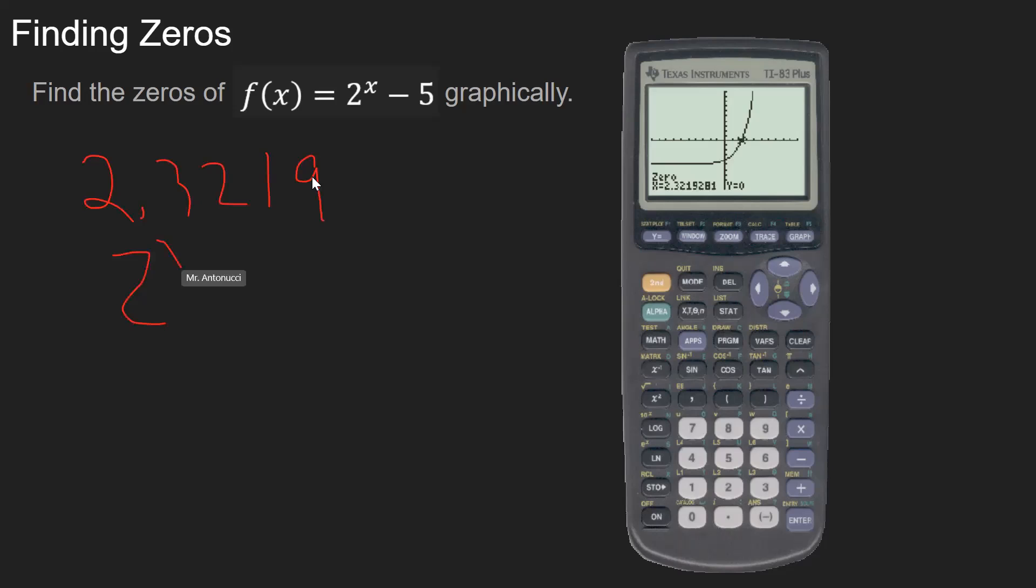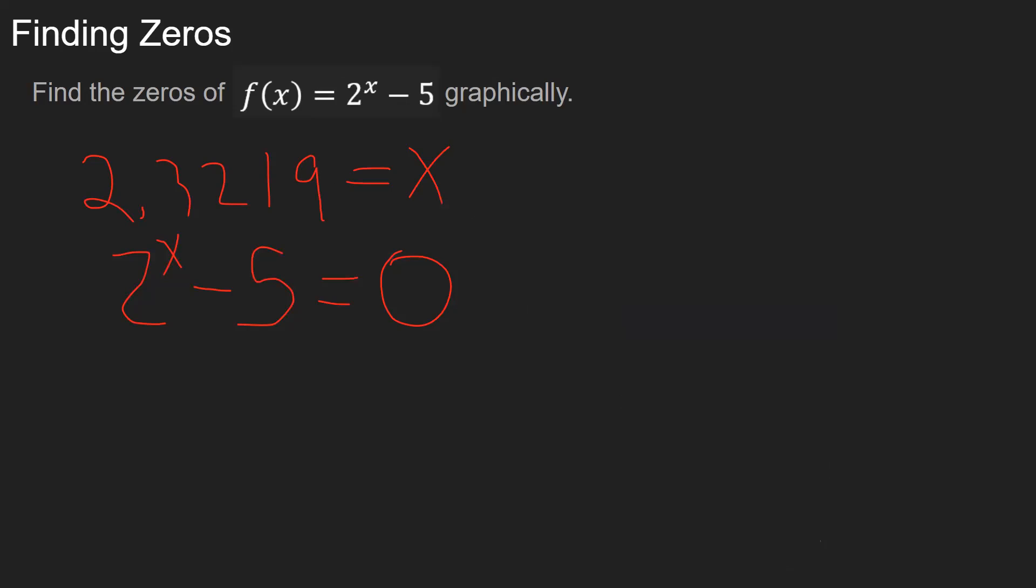In other words, what we're doing is solving the equation 2 to the x minus 5 equals 0. And this is the value you would get for x. Now, I'm going to show you how to do this using Desmos.